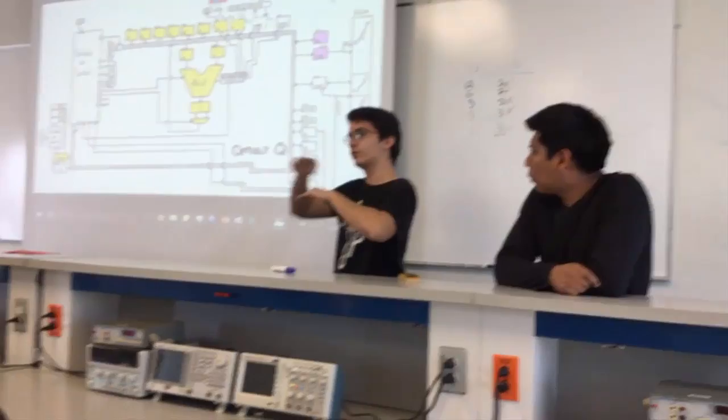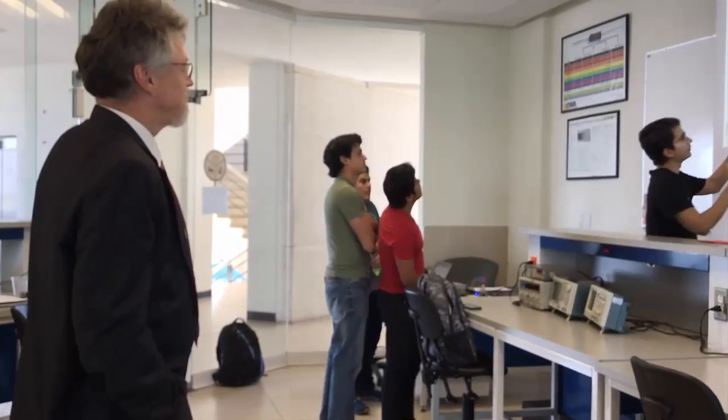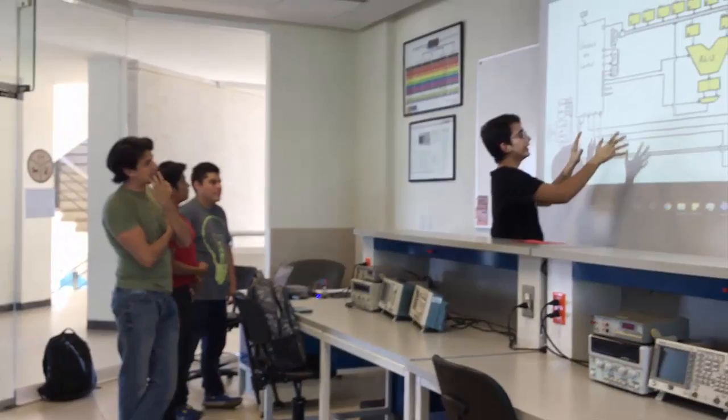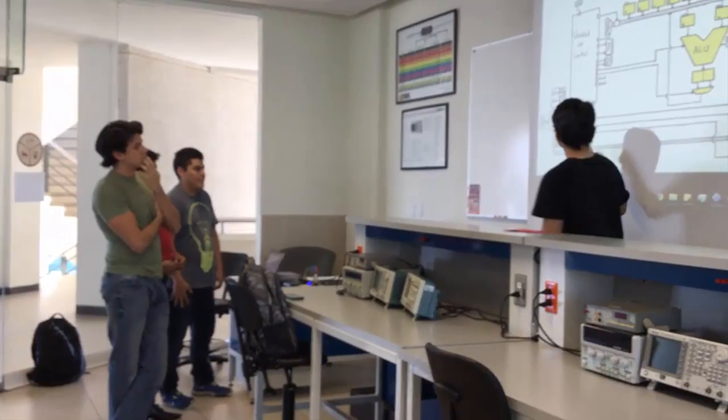The control unit is the one which tells everyone what to do. It knows what to do, and the components know how to do it. We compute here and output using the video unit.